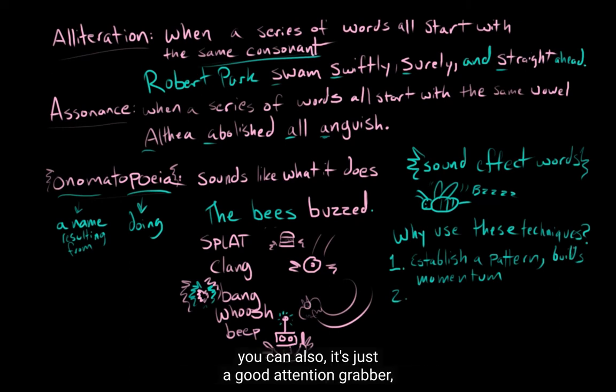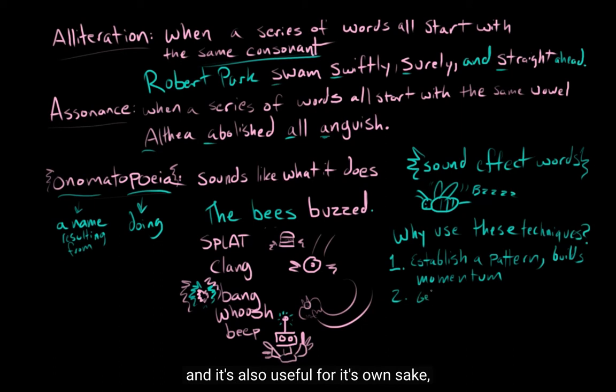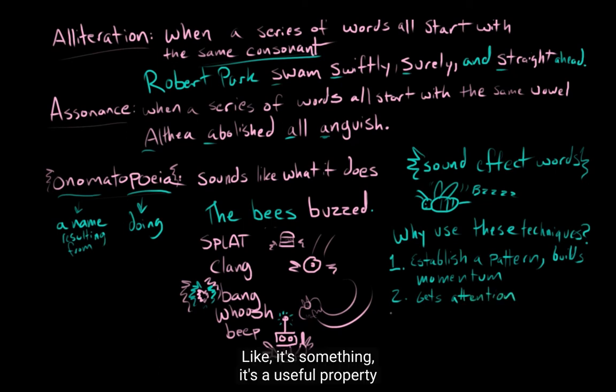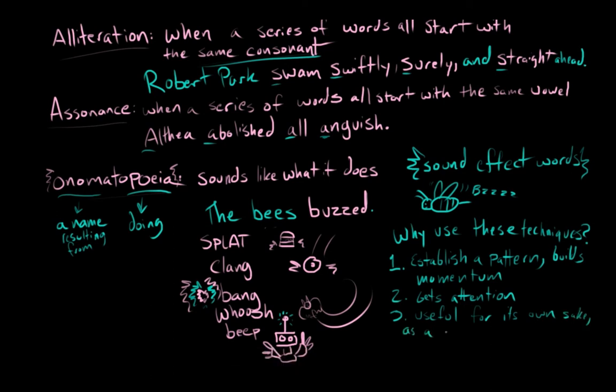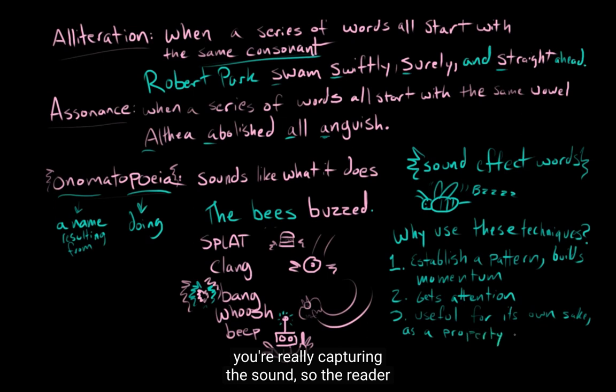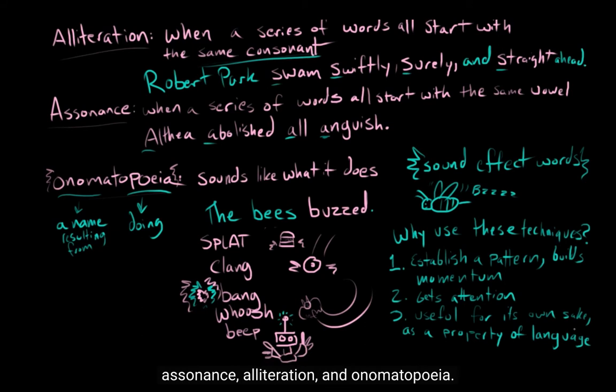And it's also useful for its own sake, just as a technique for writing prose or poetry. Like, it's something, it's a useful property of language to be able to sometimes access. Right, and a good example with onomatopoeia, onomatopoeia, is you're really capturing, you're really capturing the sound. So the reader is really able to be immersed in the experience even more fully. You can hear the sounds that are happening, the buzzing of the bees, or, yeah, it just puts you even more in the story that the writer is telling. That's why you would want to learn how to use assonance, alliteration, and onomatopoeia. You can learn anything. David out. Rosie out.